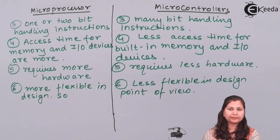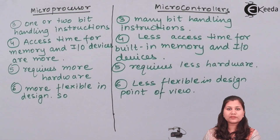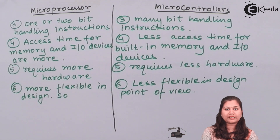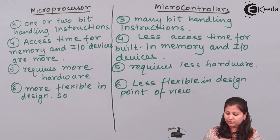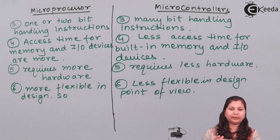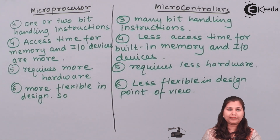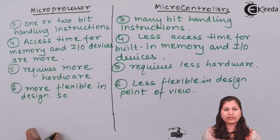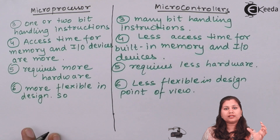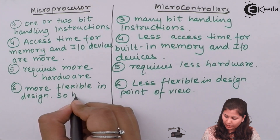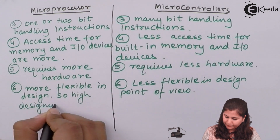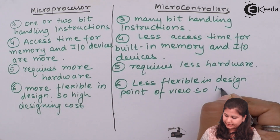Microprocessors are more flexible in their design — a single microprocessor can be used for various applications — whereas microcontrollers are less flexible from a design point of view. Because a single microprocessor can be adapted for different applications, its designing cost is very high. Microcontrollers, being less flexible, are used for a single specific application once manufactured, so their designing cost is low.